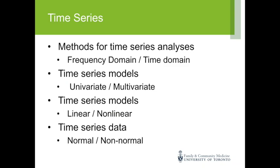Time series has quite a large number of branches. It is either frequency domain, popular in engineering, or time domain, which statisticians are more interested in. Time series is either univariate — one single series — or multivariate, where more than one outcome is measured at any given time point. Time series could be linear, like an ARMA model, or non-linear. The data could be normal or non-normal; classical time series assumes normality, but models exist for count and binary data as well.